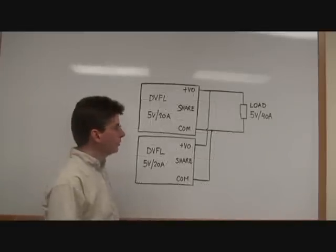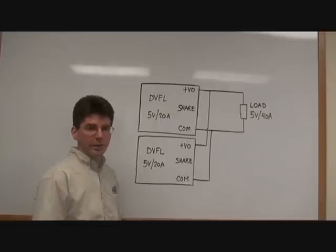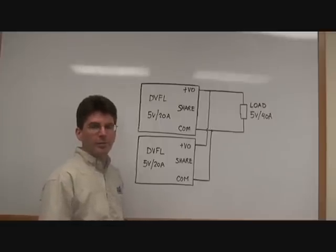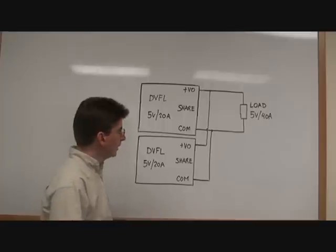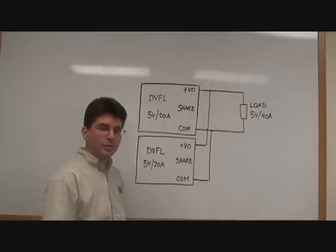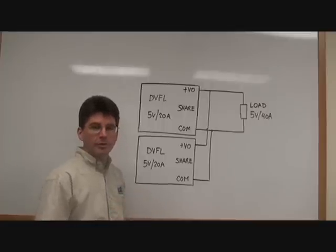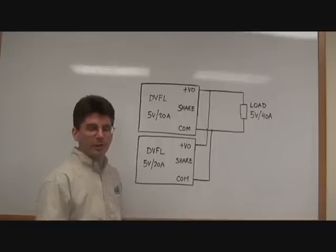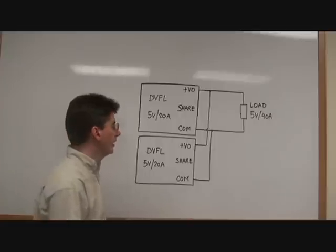This diagram shows two DVFL 2805S single output converters connected in parallel. Now, if left like this, one converter would take most of the load and the second would pick up the remaining load. So we connect the share line.